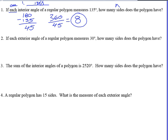Next one says, each exterior angle of a regular polygon measures 30 degrees. So I'm giving you one exterior angle. How many sides does the polygon have? Very similar to what we just did last time. We're going to do 360 divided by 30. And that gives us 12. So there are 12 sides. It's a dodecagon.